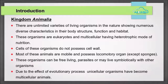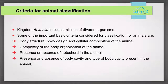We begin this lesson with understanding about Kingdom Animalia in detail. There are unlimited varieties of living organisms in nature showing numerous diverse characteristics in their body structure, function and habit. Due to the effect of evolutionary process, unicellular organisms have become multicellular animals. Animals belonging to Kingdom Animalia are eukaryotes and multicellular, having a heterotrophic mode of nutrition. Cells of these animals do not possess cell walls.